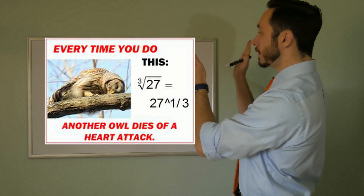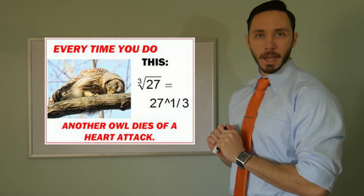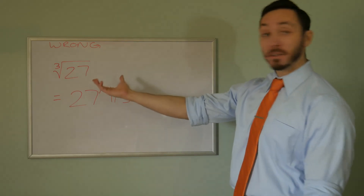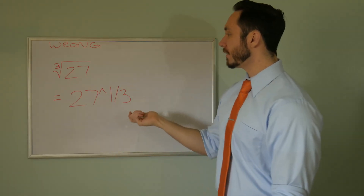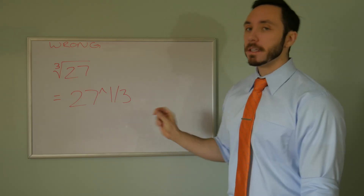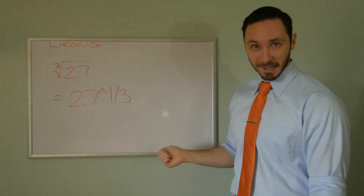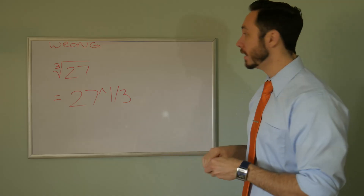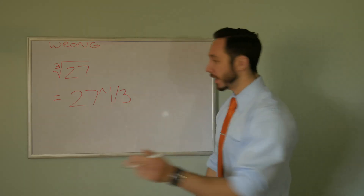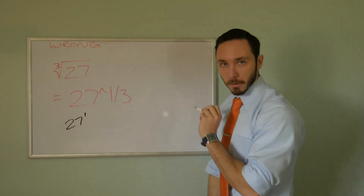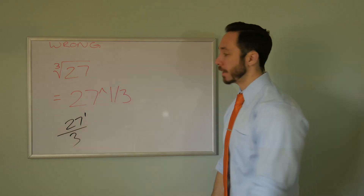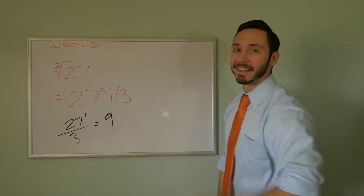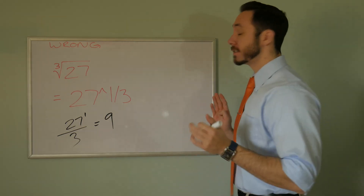Next one: every time you do this, another owl dies of a heart attack — very specific, and why they chose owl I have no clue. We have the cube root of 27 and that's equal to 27 to the first divided by three. These are two different ideas — you have to be very careful when typing this in a calculator. What's happening is the calculator reads it as 27 to the first, and then divides that by three — so 27 divided by three gives you nine. What is the student actually trying to do?